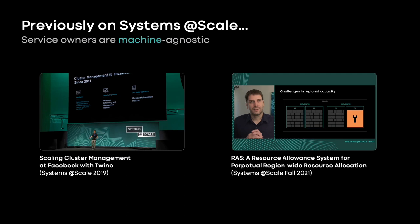In previous Systems at Scale talks, we talked about how we are scaling cluster management with Twine and how we are handling perpetual region-wide resource allocation with RAS. These are fundamental systems that provide us abstractions and automation necessary for service owners to be more mission agnostic within a region. While this is great, what happens when the number of regions we have grows?